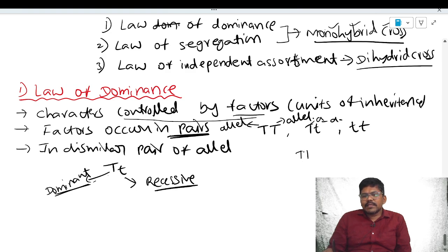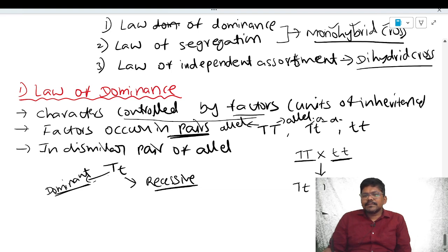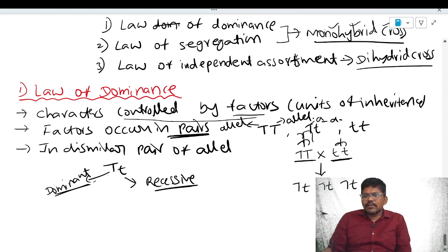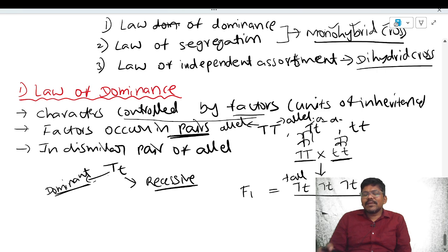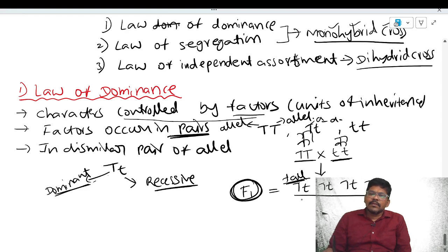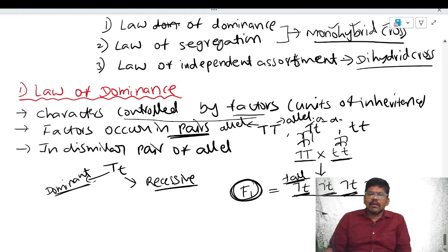The dominant allele expresses its character in the F1 generation. When you cross a homozygous dominant genotype plant with a homozygous recessive genotype plant, you get heterozygous dominant plants in F1. For example, crossing homozygous tall with homozygous recessive dwarf gives all tall plants in F1 — no dwarf plants — because of the law of dominance. The dominant allele expresses its phenotypic character in both homozygous and heterozygous conditions.